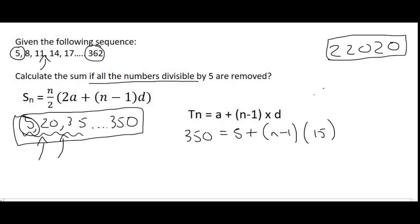So, now we can take the 5 over to the left. That's 345 equals to n minus 1 times 15. We can then divide by 15 on the left hand side. And, that will give us 23 equals to n minus 1. And, then we solve for n and we get 24 terms. So, there are 24 terms that are divisible by 5.